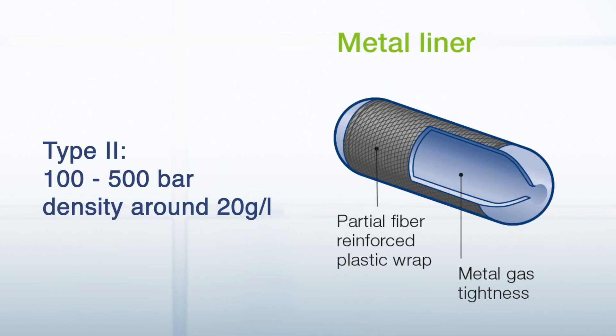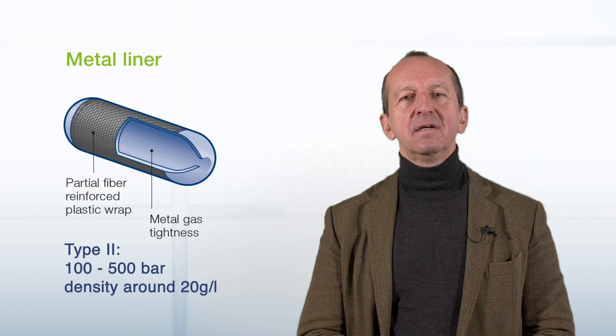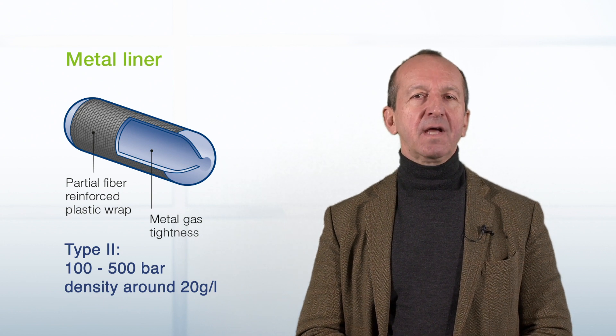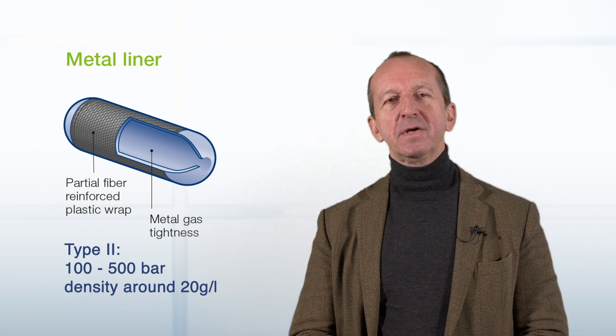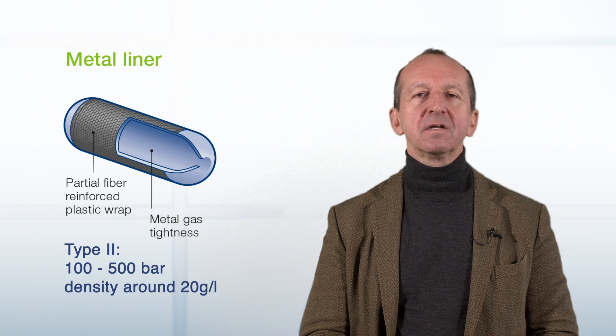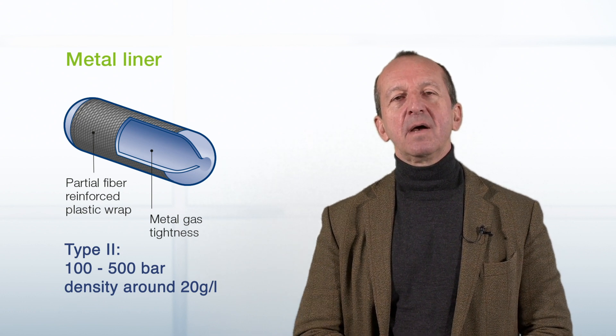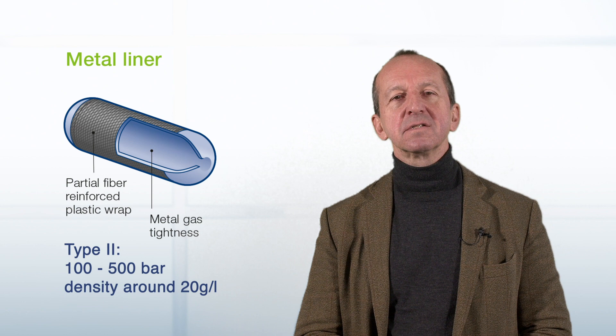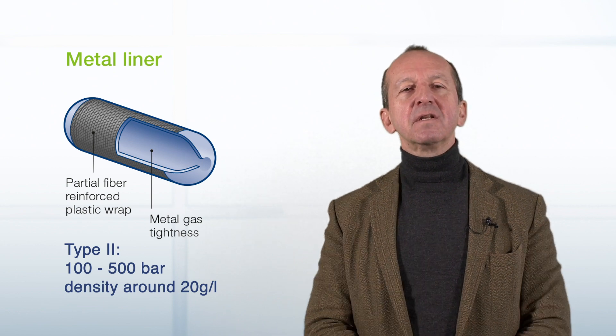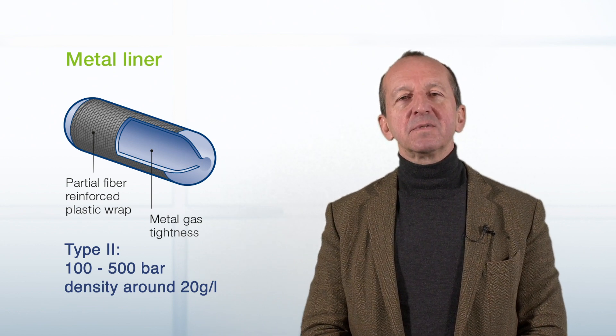Type 2, so to speak, is an improvement over Type 1. On the outside, it has a different additional fiberglass reinforcement, which increases the stability of the tank, allowing gas storage at a higher pressure. The operating pressure for this tank is typically 100 to 500 bars, and those tanks are mainly used in industrial applications. The density of that hydrogen is around 20 grams per liter.